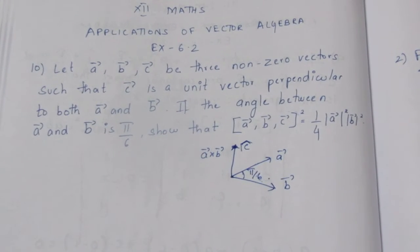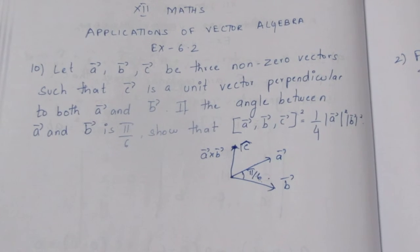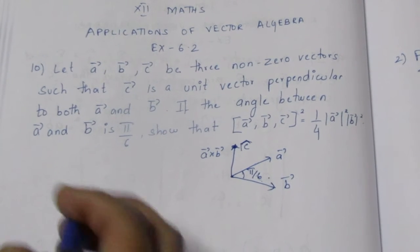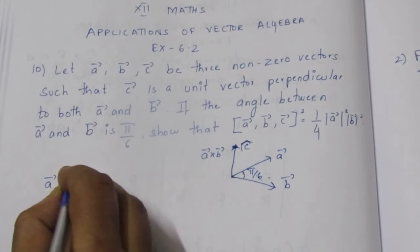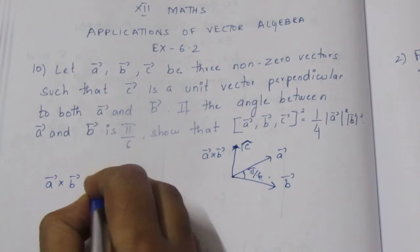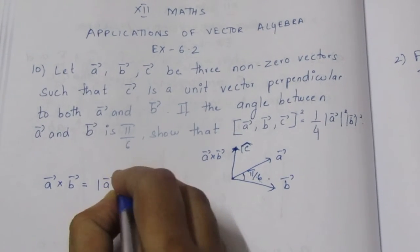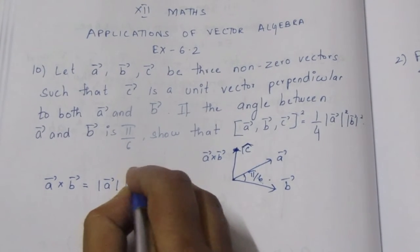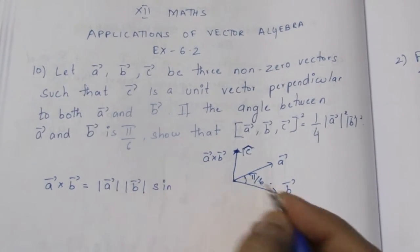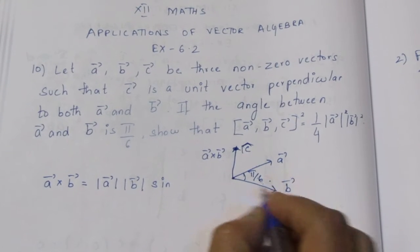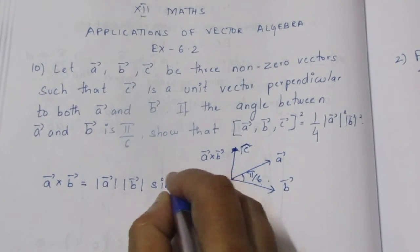If we know the cross product, we will use the formula. The formula is: a vector cross b vector is equal to modulus of a vector times modulus of b vector times sin θ. Here sin θ is the angle between a and b, that is why we have π/6.